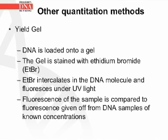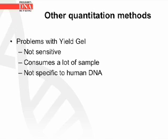With the yield gel method, the DNA is loaded onto a gel, which is then stained with ethidium bromide. Ethidium bromide intercalates in the DNA molecule and fluoresces under UV light. The fluorescence of the sample is then compared to fluorescence given off from DNA samples of known concentrations. The problems with using yield gels: it is also not very sensitive, it consumed a lot of sample, and it was not specific to human DNA.